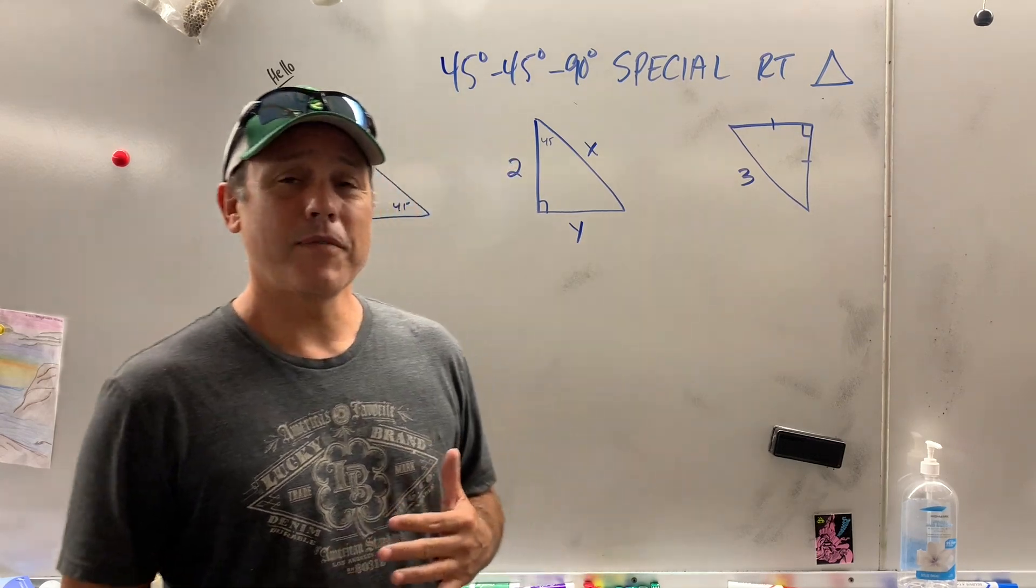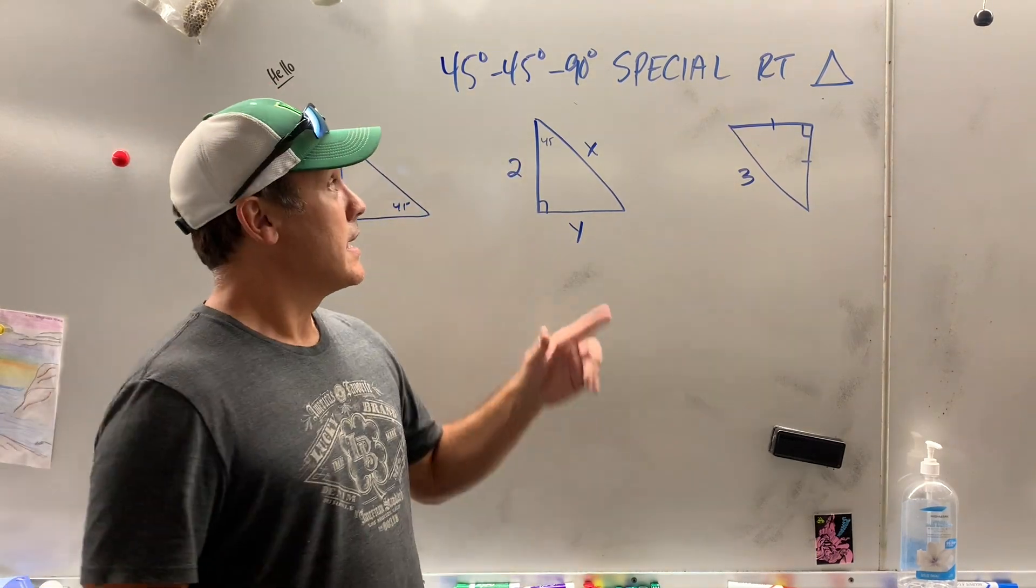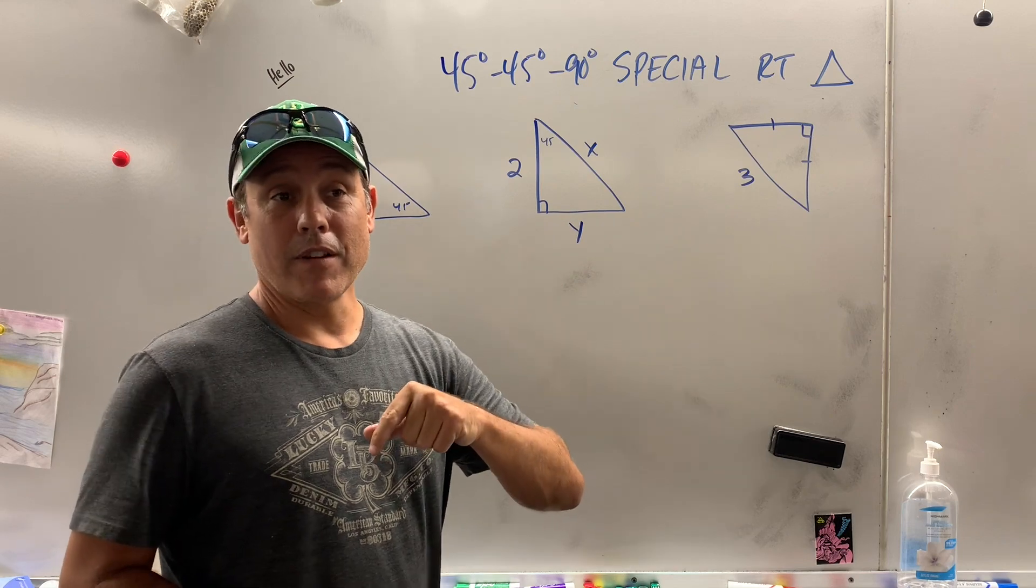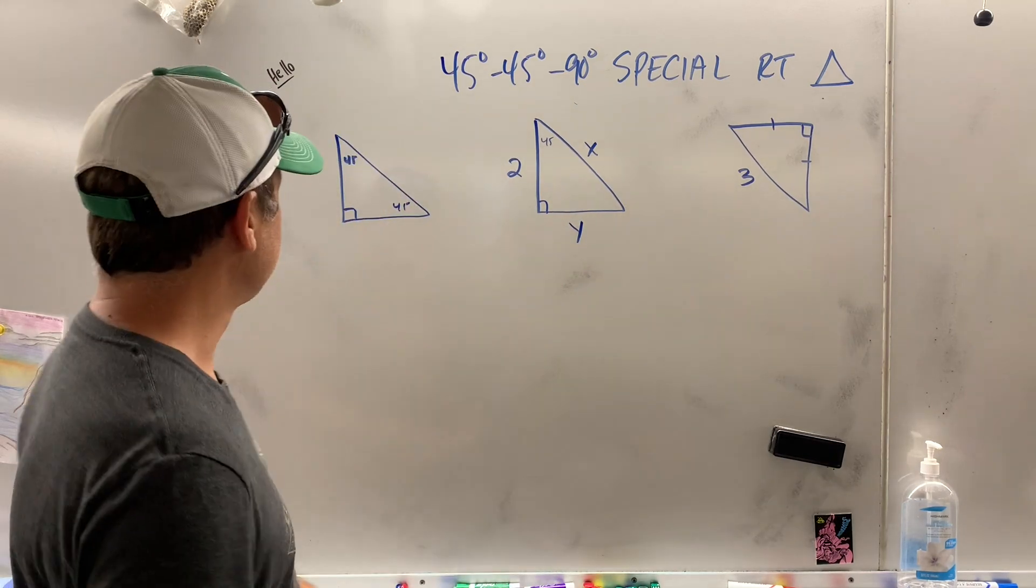All right, we're going to learn about the 45-45-90 special right triangle. If you enjoyed the 30-60-90 right triangle, this one's even easier.